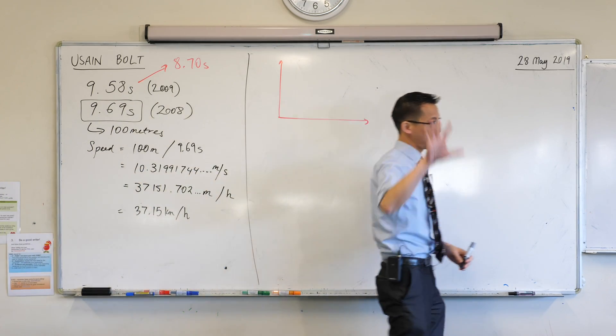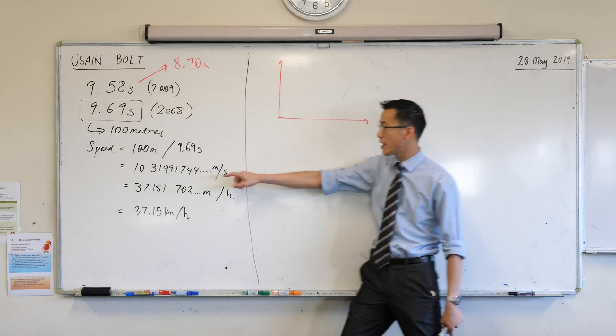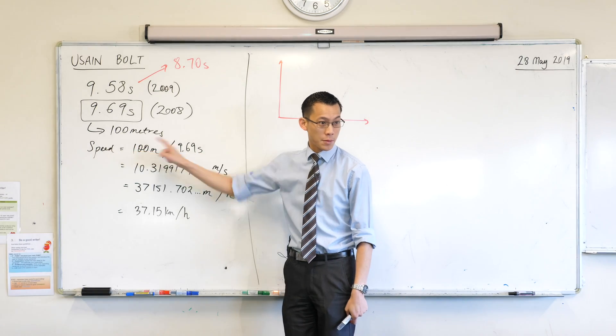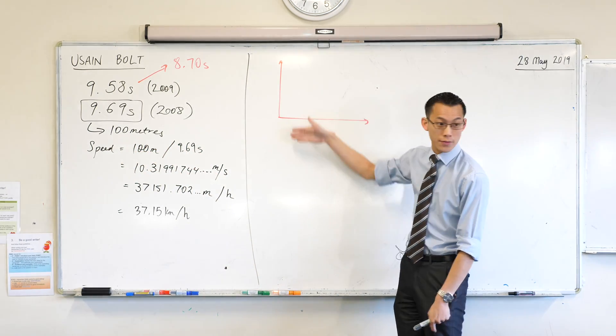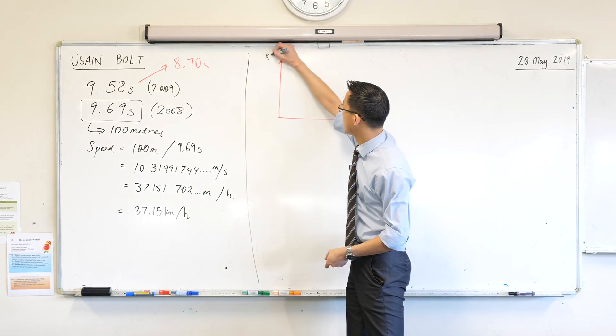Now, we would normally call these x and y, but I'm interested in these quantities here. Speed is made up of these two quantities. What are they again? Yeah, dependent and independent. The dependent one, we would normally call this vertical axis, which I guess makes most sense to be distance. So I'm going to call this the distance axis.